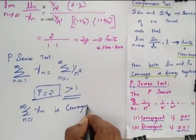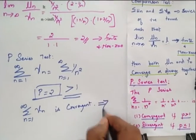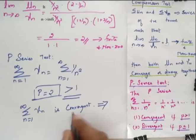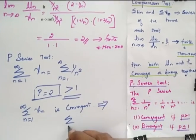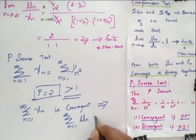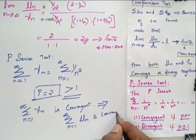So when my vn is convergent, it implies that my un is also convergent. So summation n tending to infinity of un is convergent.